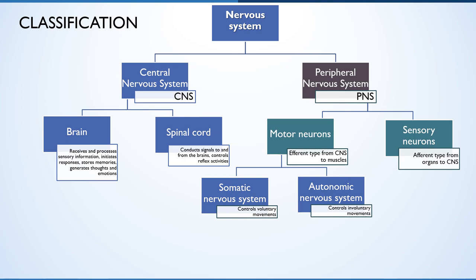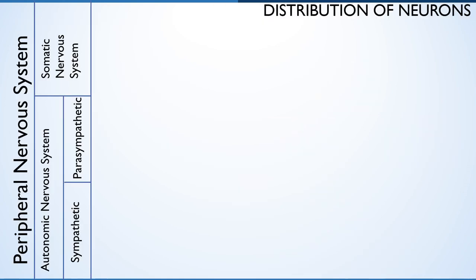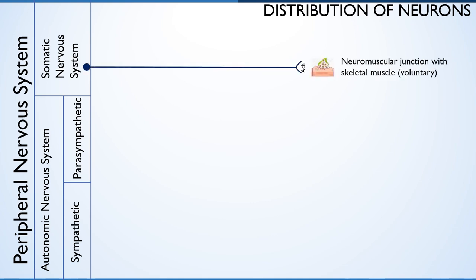Traditionally, they are described as the effector portion of the peripheral nervous system. The autonomic nervous system is again subdivided into sympathetic and parasympathetic nervous system. The somatic nervous system consists of two types of neurons: sensory and motor neurons. The motor neurons conduct impulses from the central nervous system to skeletal muscles only, and hence can be consciously controlled. The efferent part is primarily concerned with voluntary functions like respiration, posture, and locomotion.